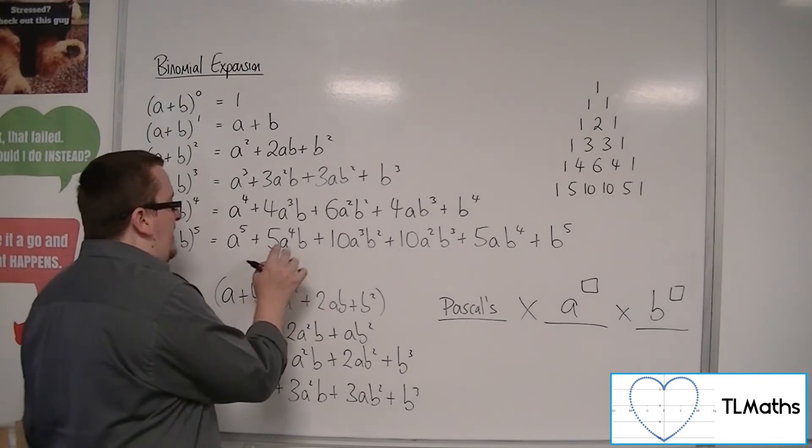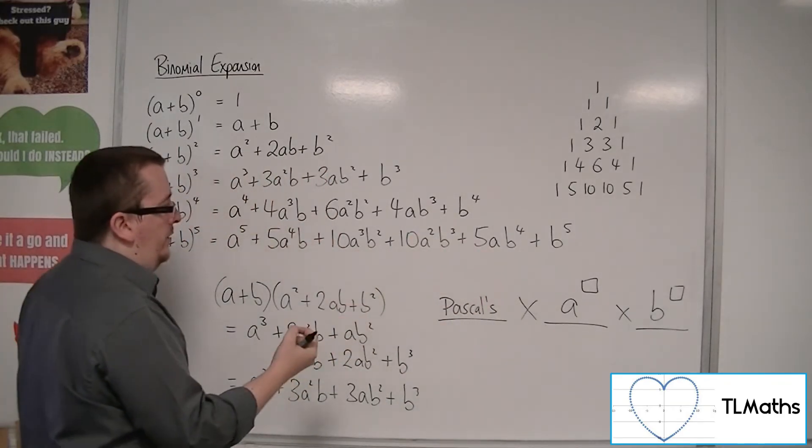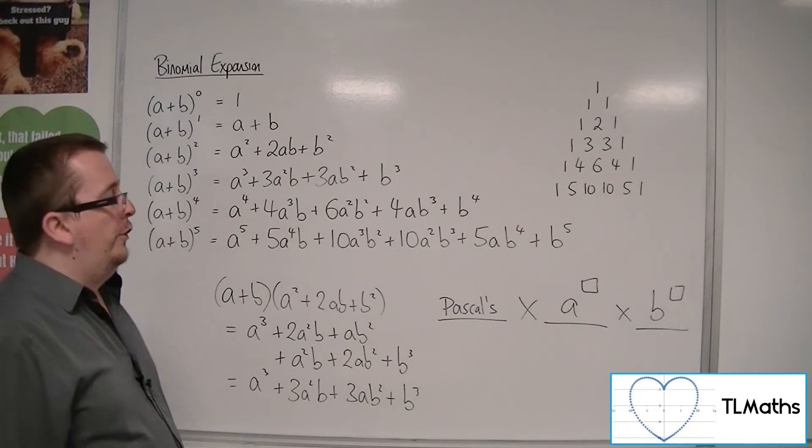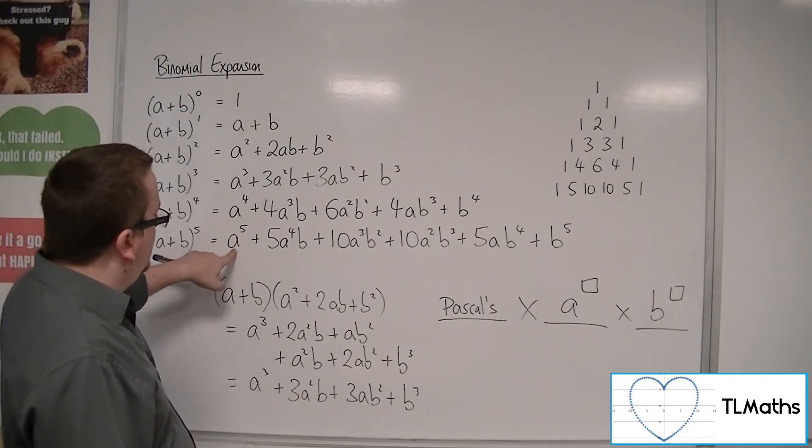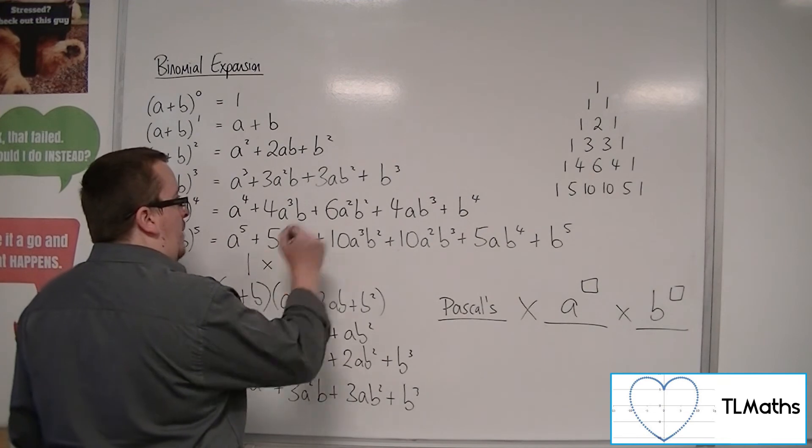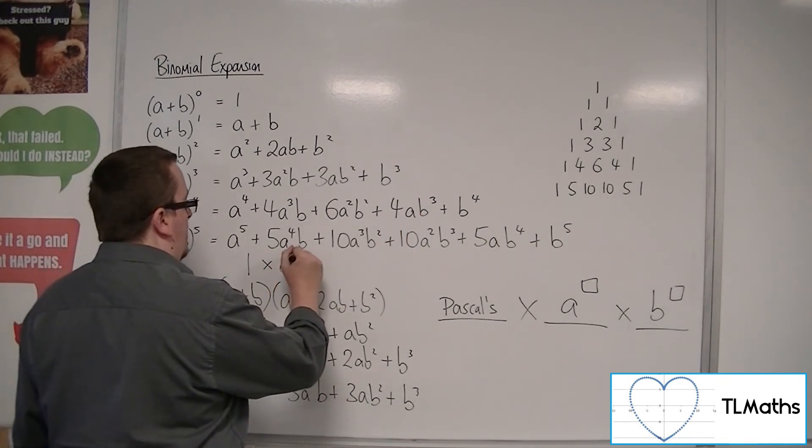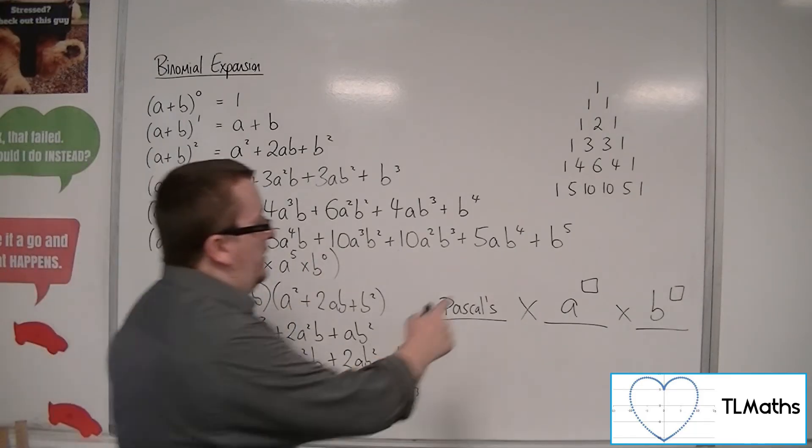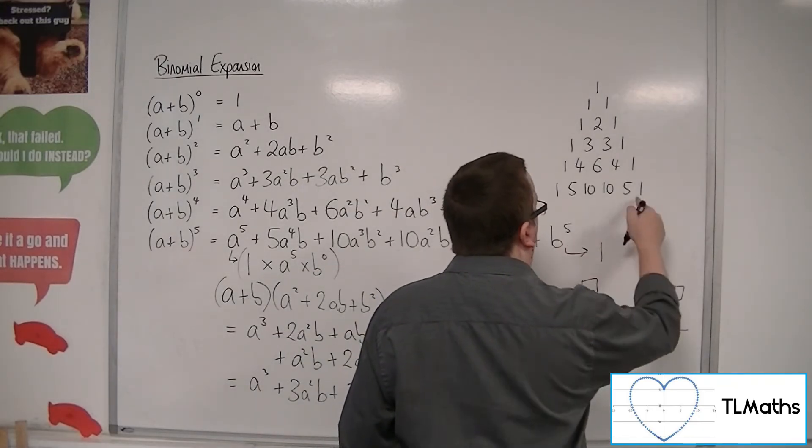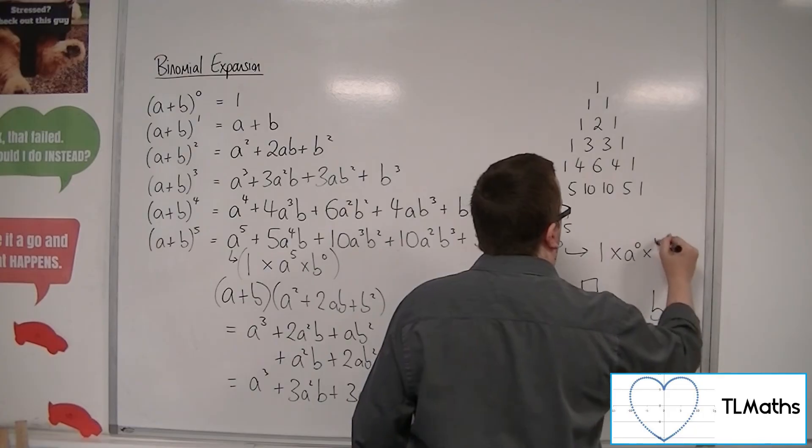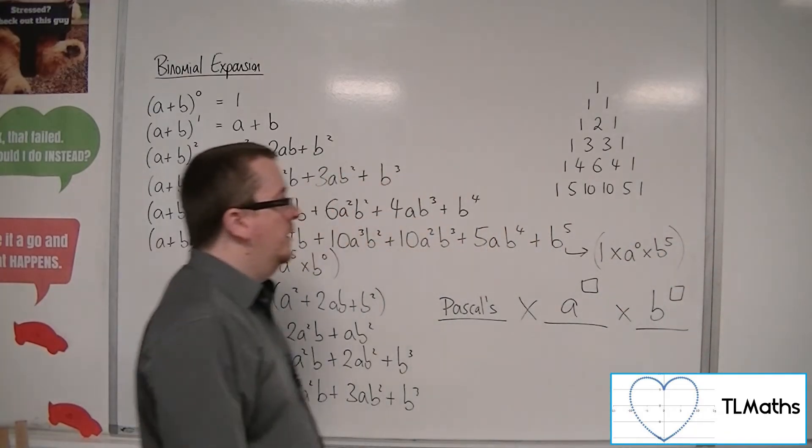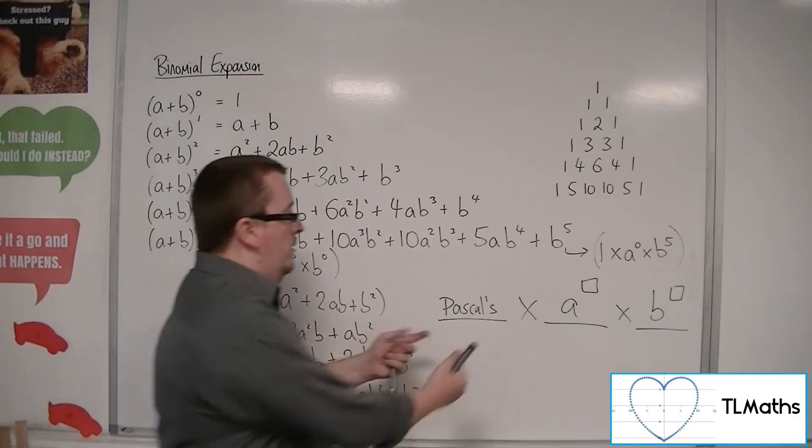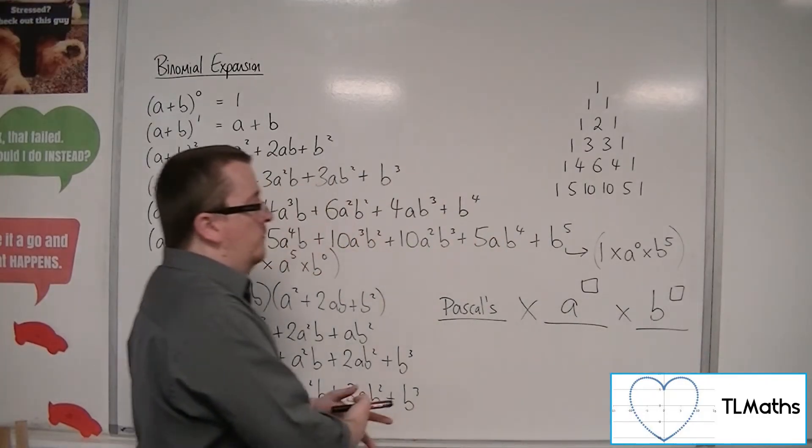Now it doesn't look like these end points, these N terms, have those three parts. But remember that what A to the 5 is, is 1 from Pascal's, times by A to the 5, times by B to the 0. That's what that means. And the B to the 5 is representing 1 times A to the 0 times B to the 5. So in actual fact they are of precisely the same format, if you will.